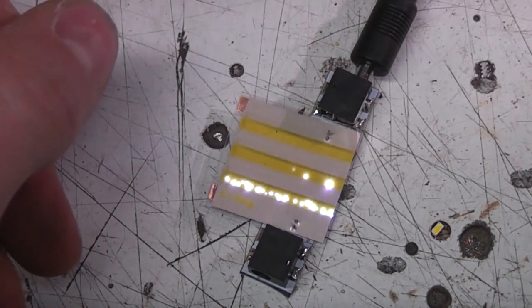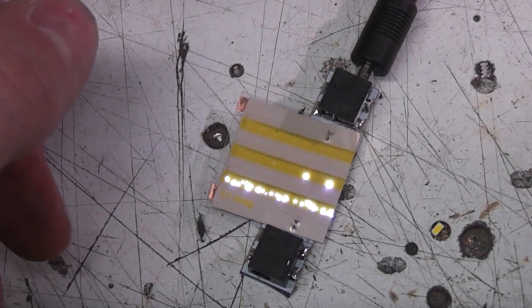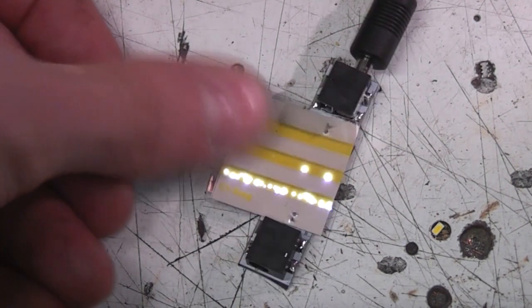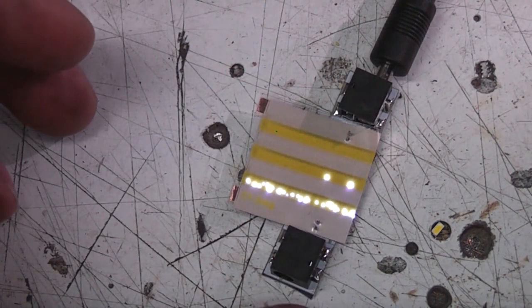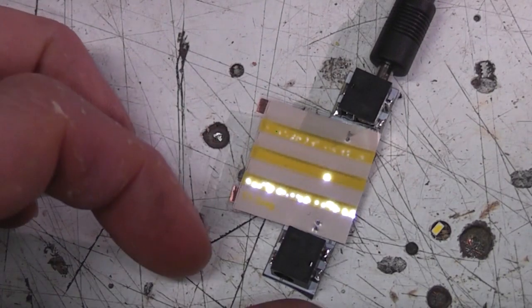So 15. The current's dropped down to almost zero so it's probably gone open circuit. Now we've got a few on this row still working. 17.